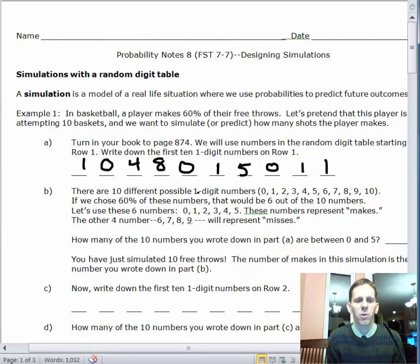Now, there are 10 different possible one-digit numbers: 0, 1, 2, 3, 4, 5, 6, 7, 8, 9. If we choose 60% of these numbers, that would be 6 out of 10. 60 coming from the percent of free throws the player makes. We're going to use these six numbers: 0, 1, 2, 3, 4, and 5. You could use any six numbers. I like to choose numbers in order. These six numbers, the 6 out of 10, the 60%, are going to represent made free throws, or makes. The other four numbers, 6, 7, 8, and 9 in this case, will represent misses.